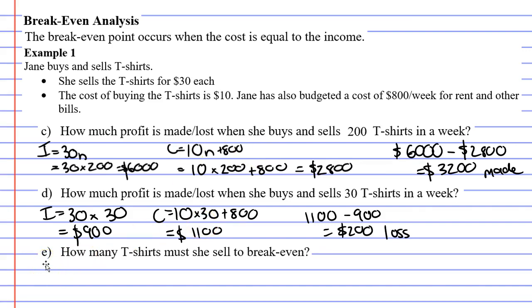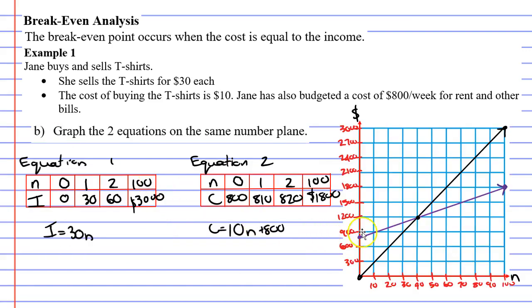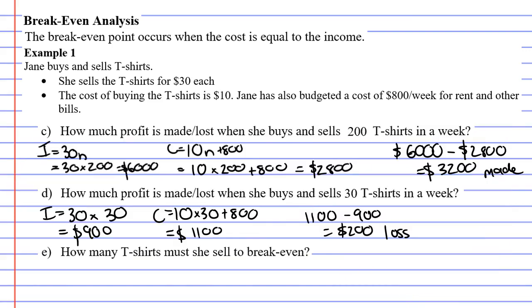Moving on to question E. It says, how many t-shirts must she sell to break even? Now, what does break even mean? Break even basically means that your income and your cost are the same, meaning that you have a profit of $0. And this is representative by the point of intersection. And we can see that that lines up with selling 40 t-shirts. So for question E, she must sell 40 t-shirts to break even.